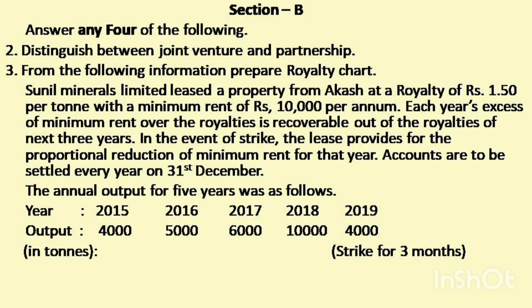Section B consists of 5 questions, out of which the student must write 4 questions. Each of the 4 questions carries 5 marks each, so 4 into 5 is equivalent to 20 marks. The total marks allotted for Section B is 20 marks. Question No. 2: Distinguish between joint venture and partnership. The student must write at least 5 points for each difference.